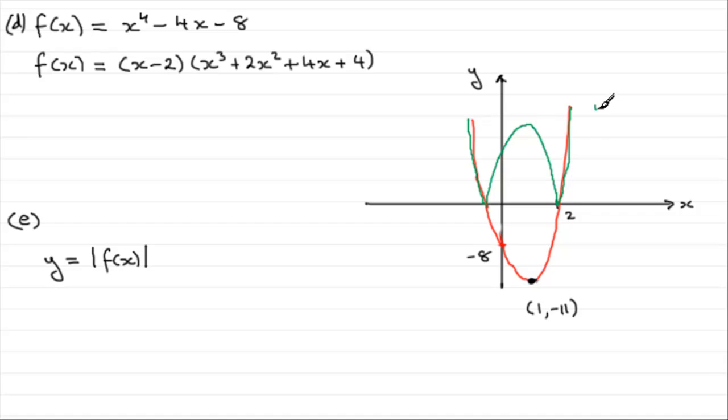So, the green graph then is Y equals the mod of F of X, whilst the red graph is the graph of Y equals F of X. This point up here, well worth mentioning, is going to be at (1, 11).